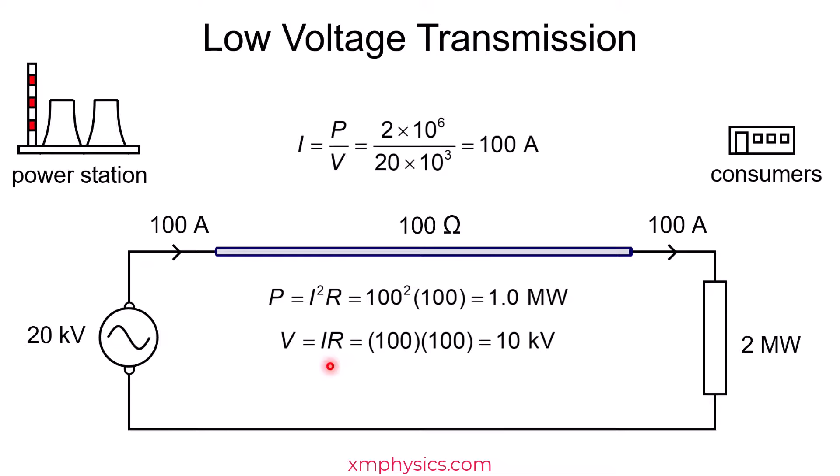And what about the potential drop across the cable? So using V = IR, turns out to be 10 kilovolts, which is of course ridiculous compared to 20 kilovolts. So if you choose to use a low voltage transmission, you will start off with 20 kilovolts at the power station but end up with only 10 kilovolts at the consumer's end. And worse still, while you deliver 2 megawatts, only 1 megawatt is delivered to the consumers because 1 megawatt is lost as heat in the power cable.